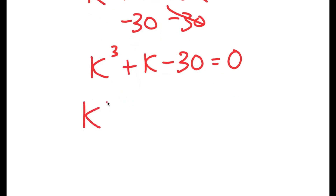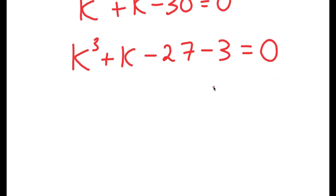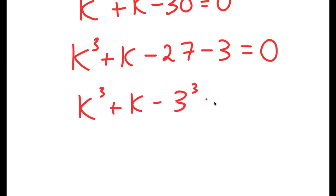Now I'm going to write this as k to the power of 3 plus k minus 27 minus 3 is equal to 0. And 27 is the same thing as 3 to the power of 3. So I get k to the power of 3 plus k minus 3 to the power of 3 minus 3 is equal to 0.